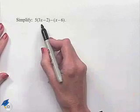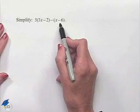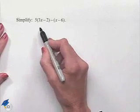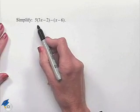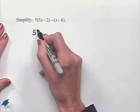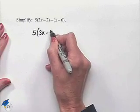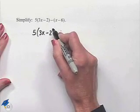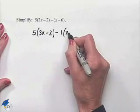Here we look inside the parentheses and notice that we cannot combine since we have no like terms. But what we can do is use distributive property. We can think of this as being 5 multiplied times 3x minus 2 minus 1 multiplied times x minus 6.